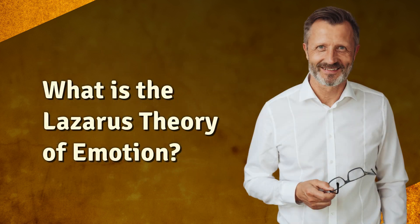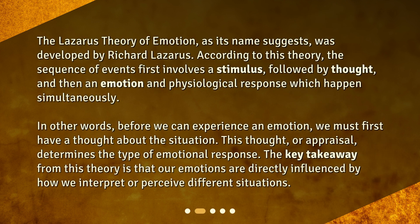The Lazarus Theory of Emotion was developed by Richard Lazarus. According to this theory, the sequence of events first involves a stimulus, followed by thought, and then an emotion and physiological response which happen simultaneously. In other words, before we can experience an emotion, we must first have a thought about the situation. This thought, or appraisal, determines the type of emotional response. The key takeaway is that our emotions are directly influenced by how we interpret or perceive different situations.